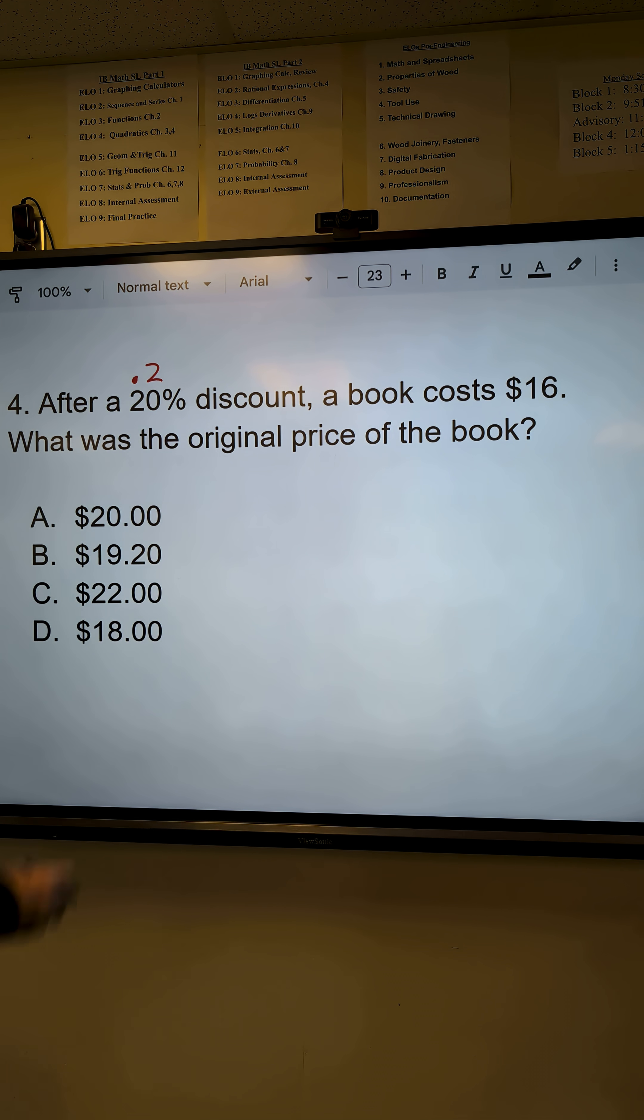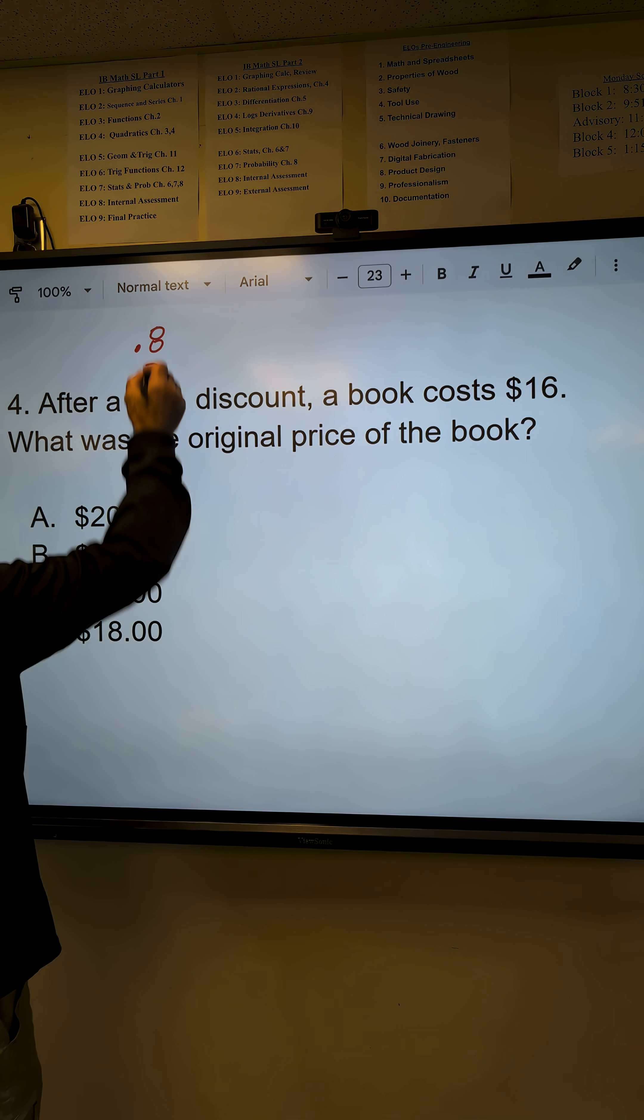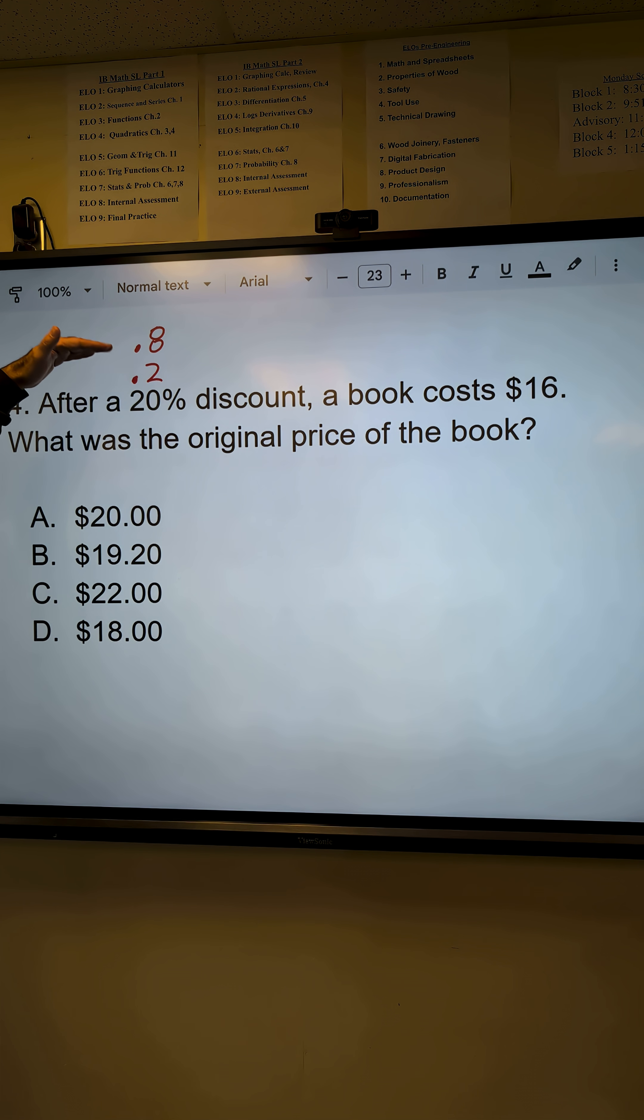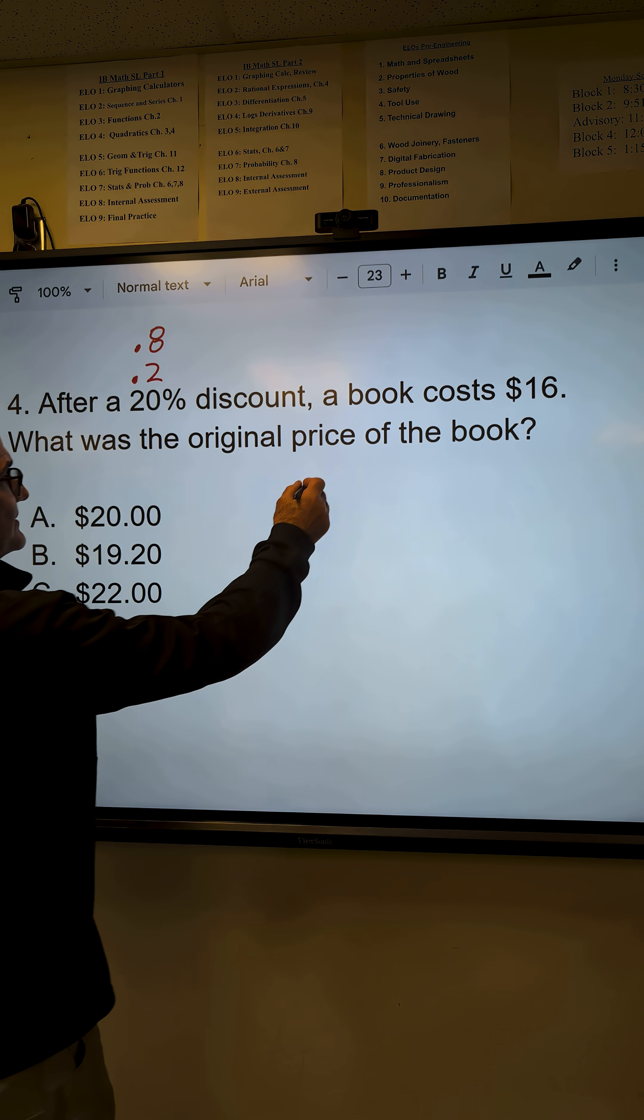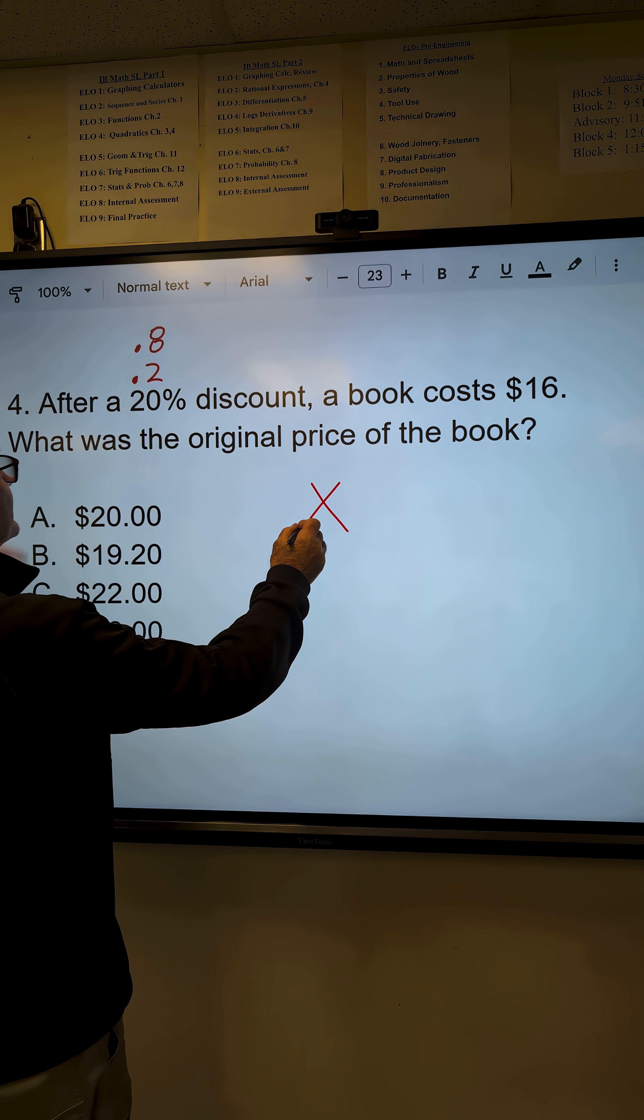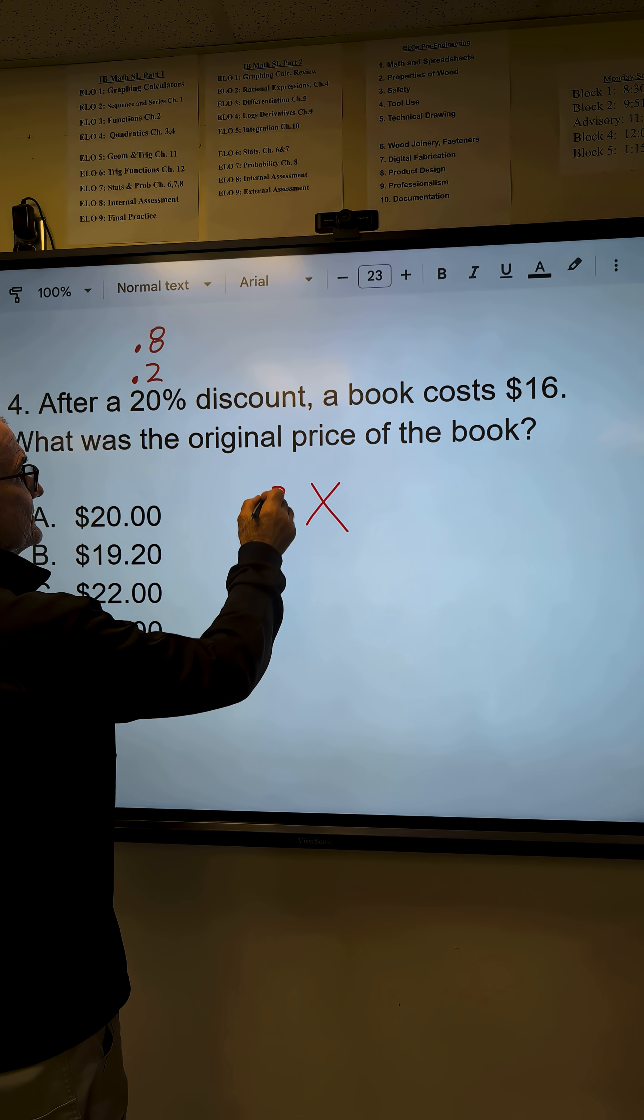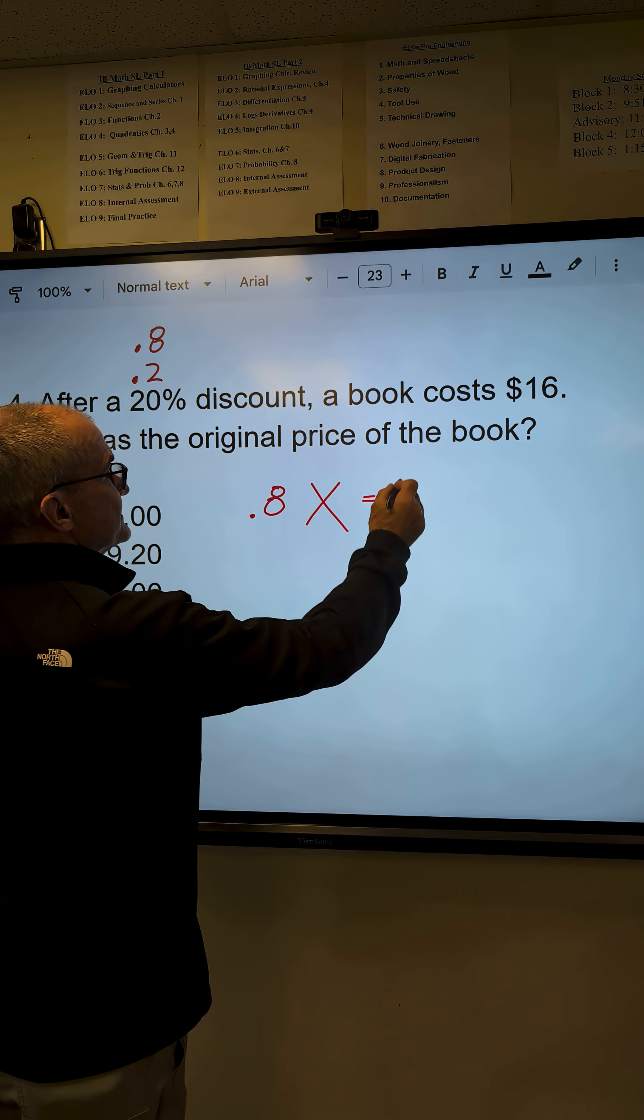If I do 1 minus .2, I get .8. That's going to be the remaining amount after the discount. So what is the original price? I'm going to say the original price is x times that .8 is equal to 16.